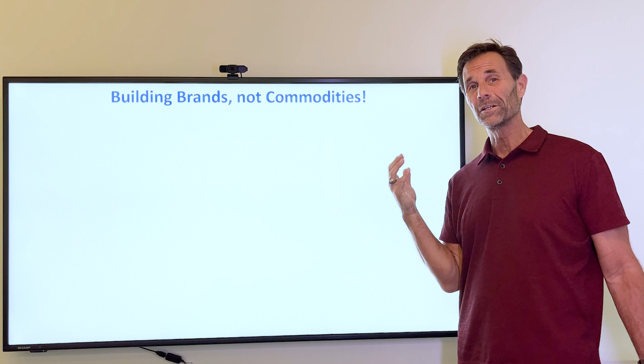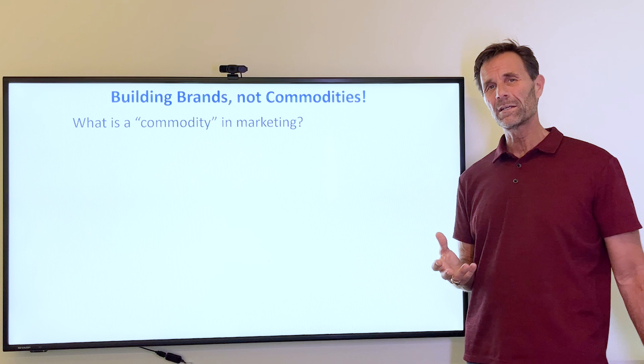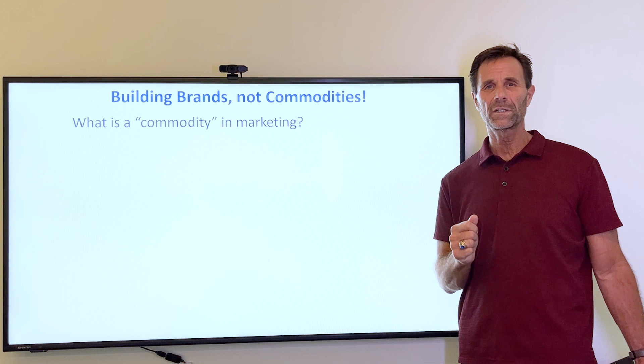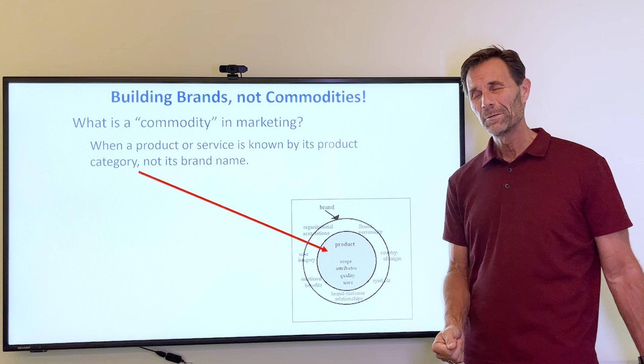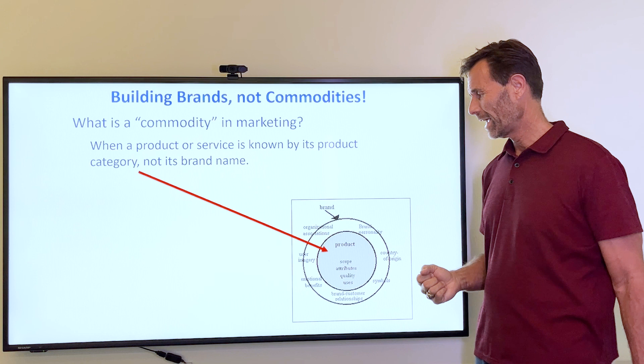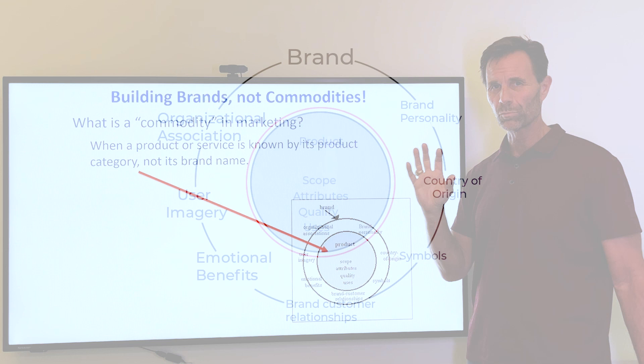What do we mean by a commodity? Commodity can mean a lot of different things in a lot of different fields. In marketing, however, it has a specific use, a specific meaning. What it is talking about can be seen by this graphic here. This is actually my favorite graphic in all of marketing, even though it's very ugly. I understand that in marketing we're usually about beauty and aesthetics, but in this case it communicates a lot of information very easily and very powerfully.